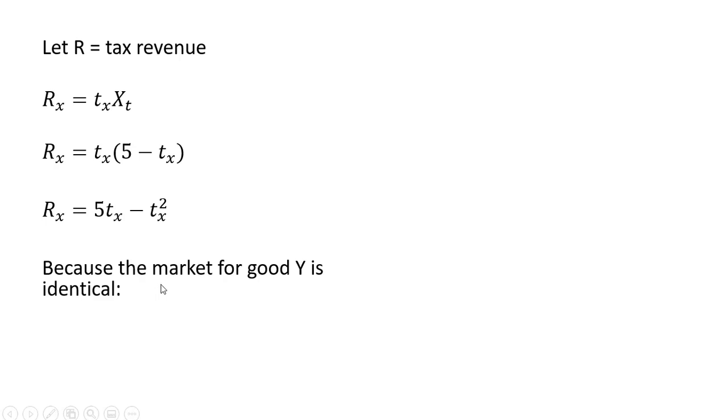Moving on to market Y, the market for good Y, because the market for good Y has identical equations, everything is basically going to be the same, except instead of t subscript x, we have t subscript y.